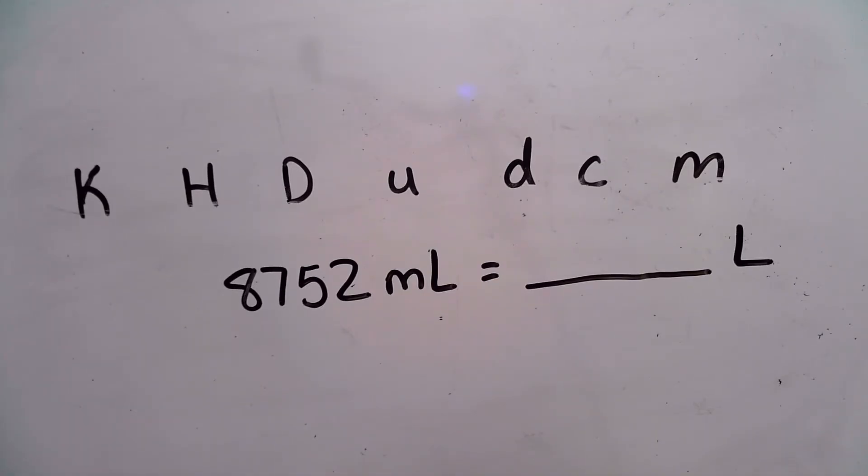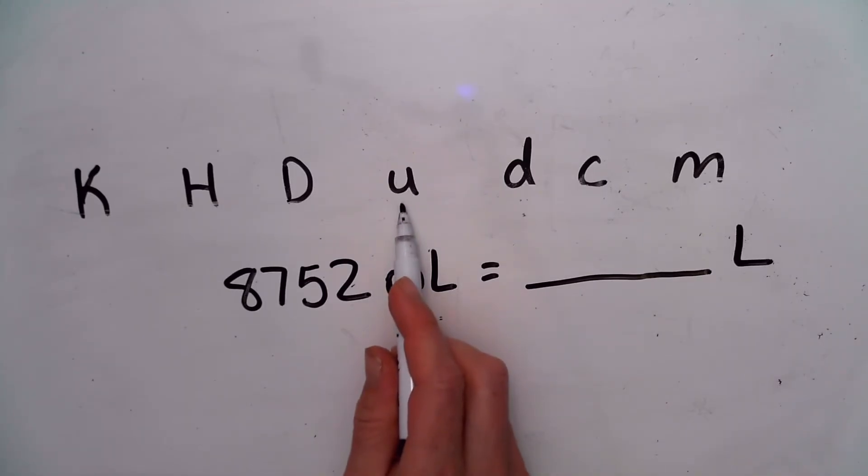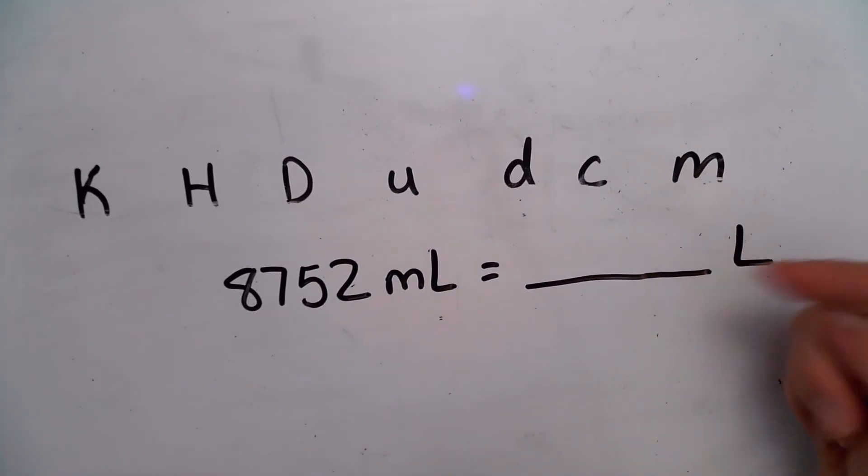This same system works for transferring units within volume as well. So here we're going to go from milliliters to liters. And you might say, hey, there's no prefix here. There's just one letter. That's because liter is one of the base units. So that means we're going to go to this spot. So we're going to start on milli, put both fingers on milli, and then go over one, two, three spots to the left to find liters.